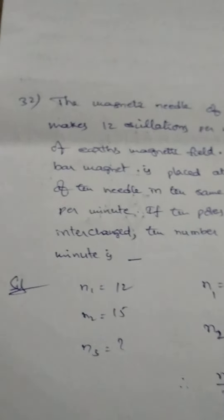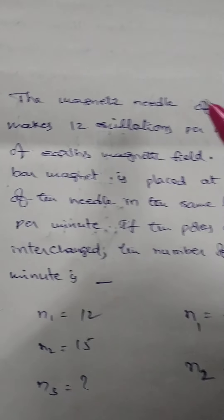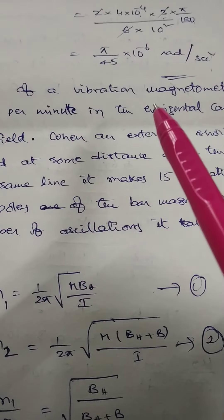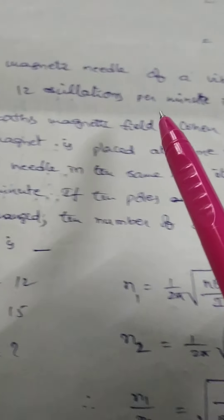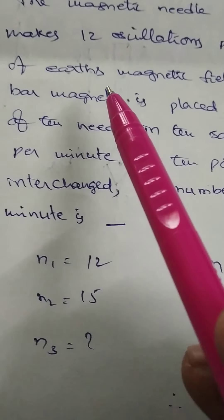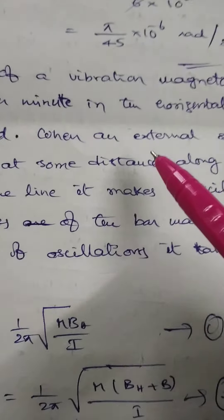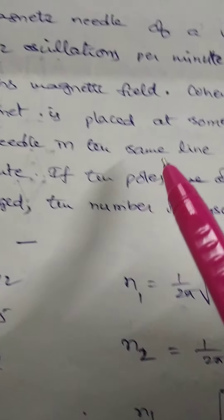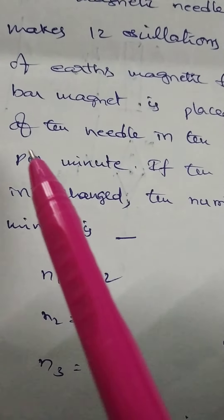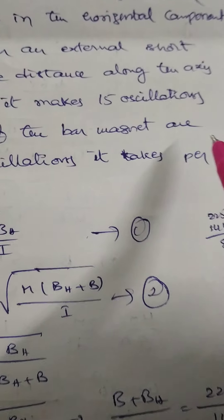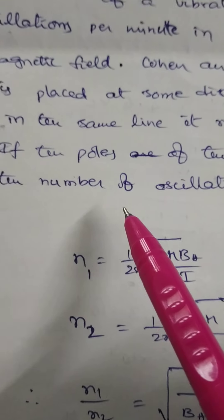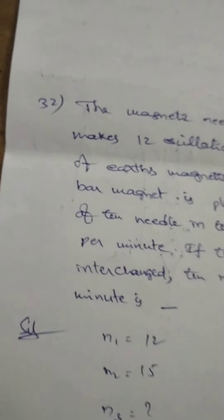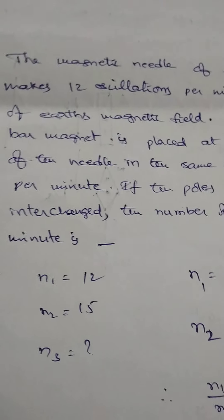Problem 32: The magnetic needle of a vibration magnetometer makes 12 oscillations per minute in the horizontal component of Earth's magnetic field. When an external short bar magnet is placed at some distance along the axis of the needle in the same line, it makes 15 oscillations per minute. If the poles of the magnet are interchanged, the number of oscillations per minute is to be found. There are three cases — oscillations per minute means frequency.